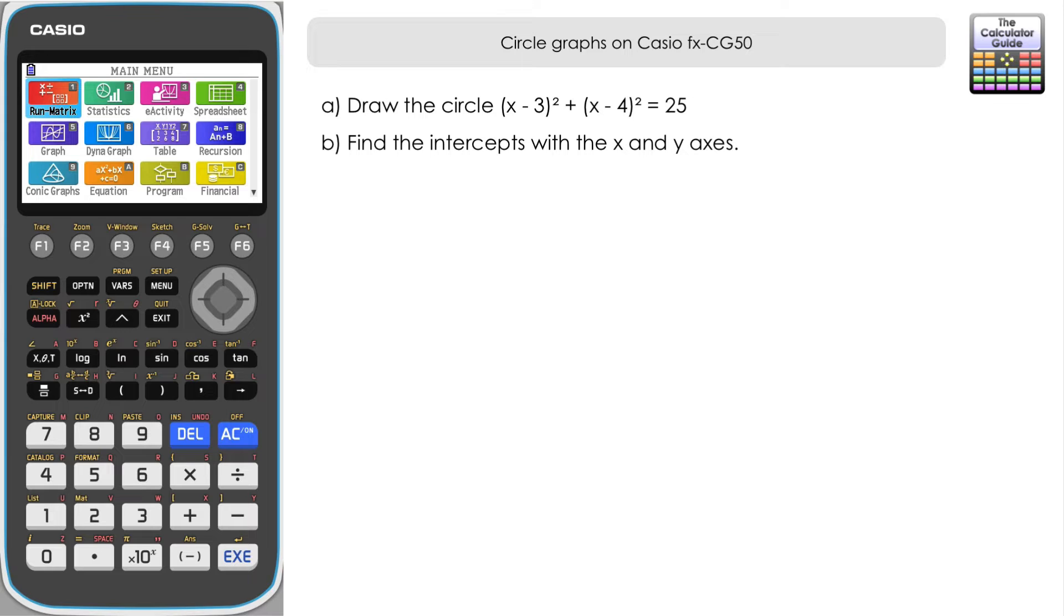Let's take a look at the first question. We've got to draw the circle x minus 3 all squared plus x minus 4 all squared equals 25 and then find the intercepts with the x and y axes.